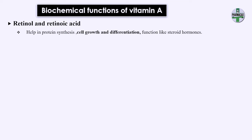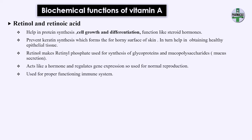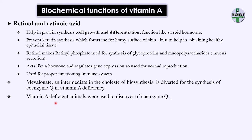The biochemical functions of vitamin A: retinol and retinoic acid are used for cell growth and differentiation, synthesis of glycoproteins and mucopolysaccharides, functioning of the immune system, and regulating gene expression because they act like a hormone. It was also found that animals deficient in vitamin A were used for the discovery of coenzyme Q, an antioxidant in the body. For this production, mevalonate is used, which is an intermediate in cholesterol biosynthesis.